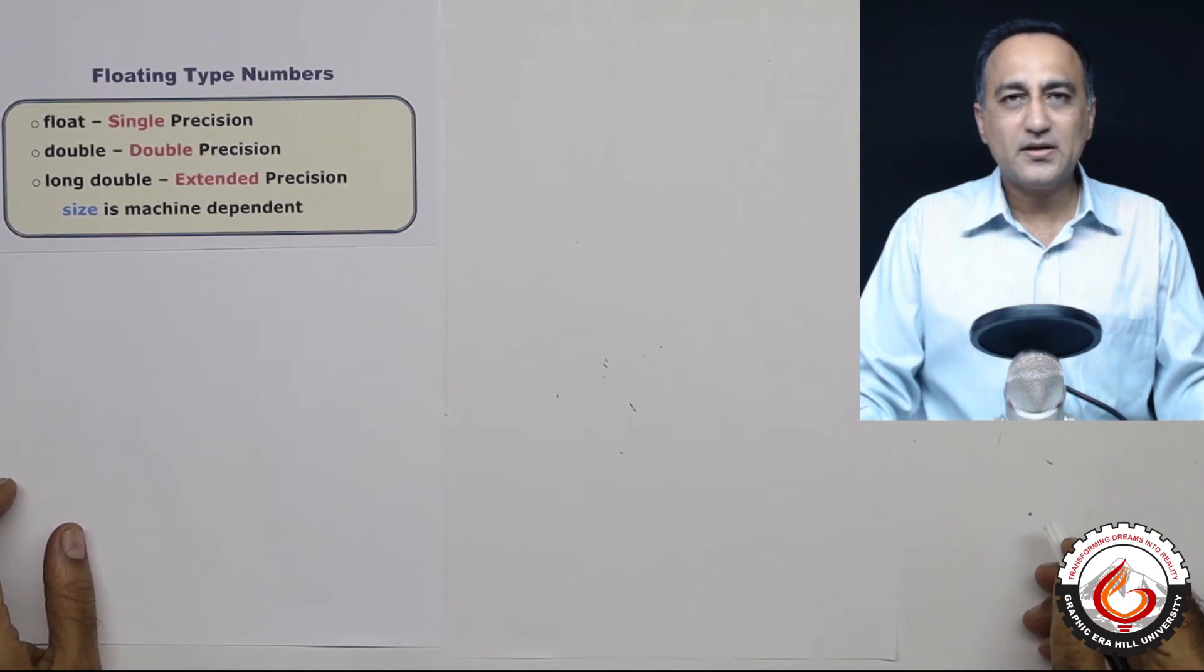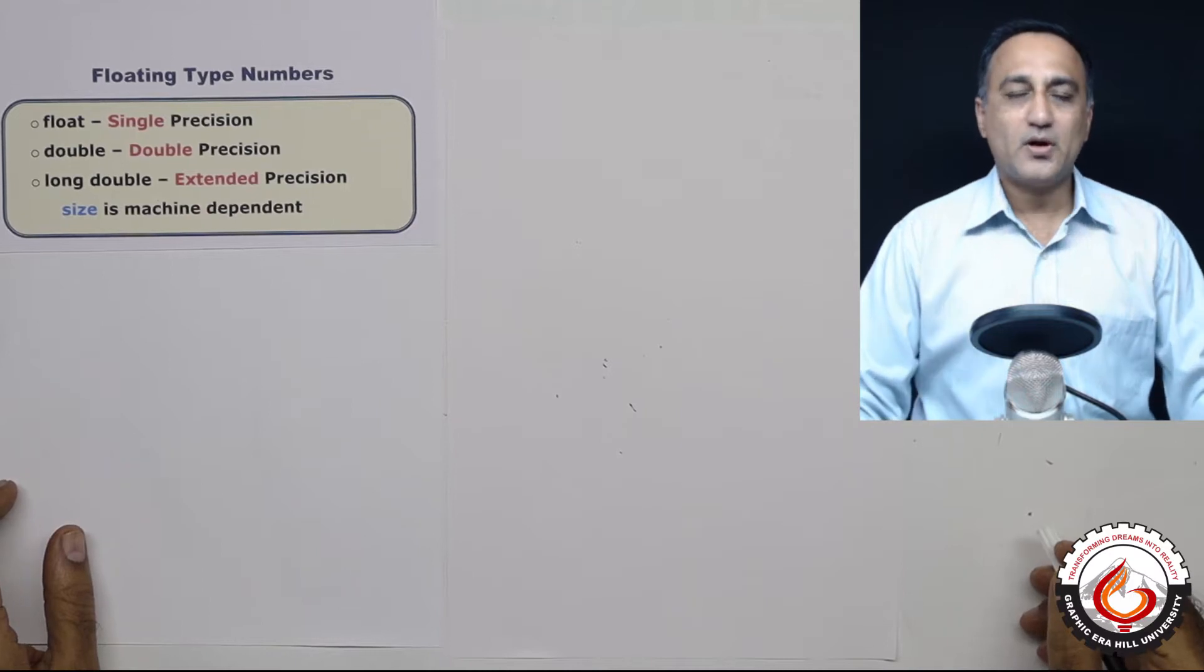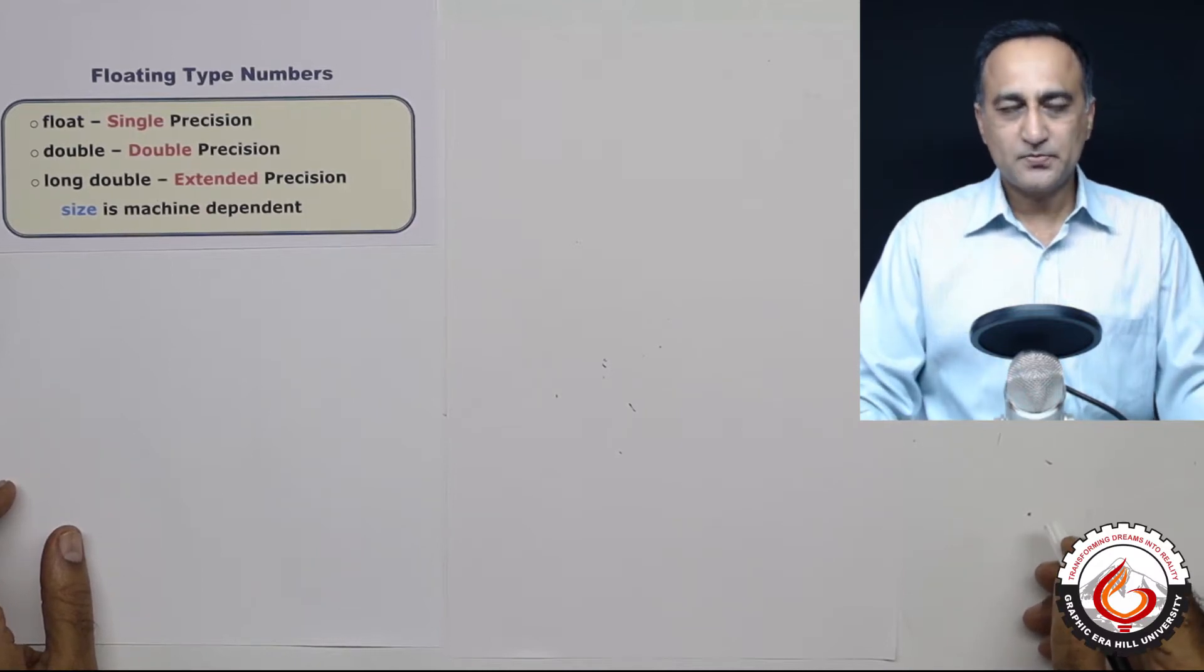Let us now take a look at the floating point data type or in math what you would call real numbers. So floating point, there are different types of floating point numbers in C programming.